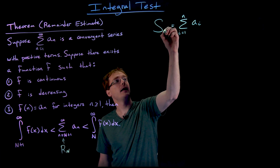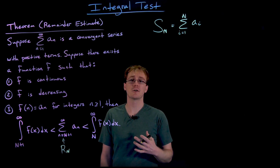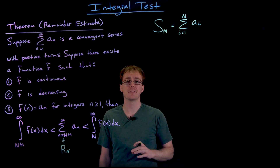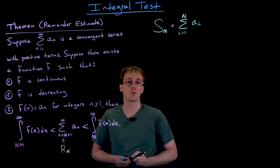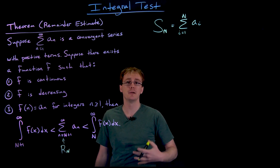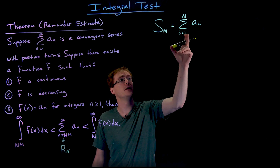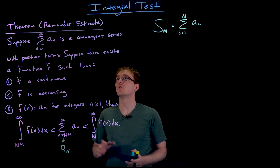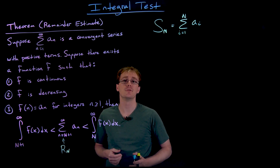So s sub n is the sum of the first n terms of our series, and the error in our approximation using the nth partial sum is just the sum of those remaining terms — what we call the remainder, or r sub n. That'll be the sum of the n+1 term, the n+2 term, the n+3 term, and so on — all those other terms in our series that we ignored in our partial sum. We actually already proved this remainder estimate theorem in our earlier discussion and proof of the integral test.